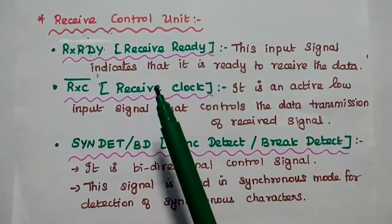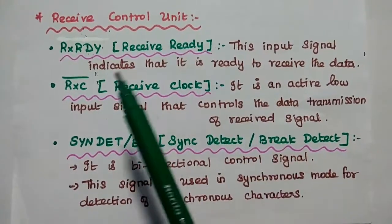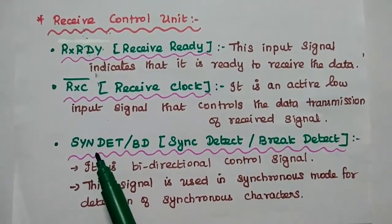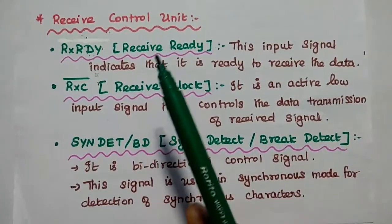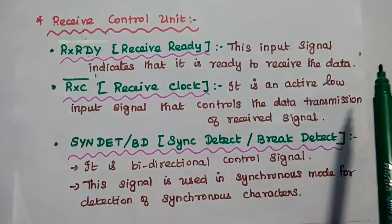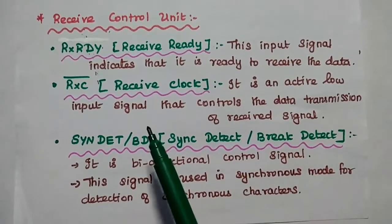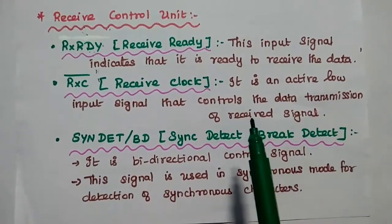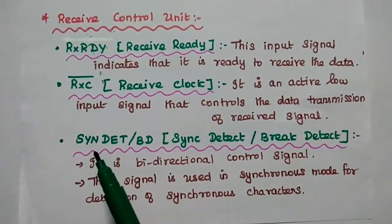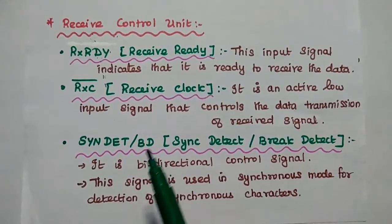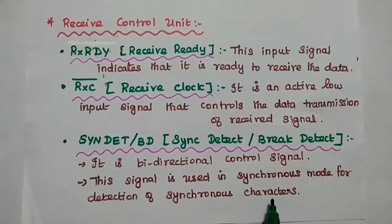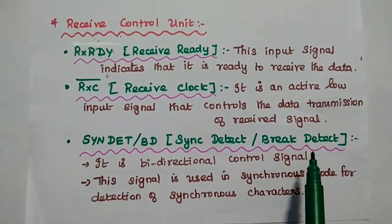The receive control unit controls the operation of the receive buffer using three signals: Receive Ready (RxRDY) — an input signal indicating readiness to receive data from the peripheral device; Receive Clock (RxC bar) — an active low input signal that controls the data reception rate from peripheral to processor; and Synchronous Detect/Break Detect (SYNDET/BRKDET) — a bidirectional control signal used in synchronous mode to detect synchronous characters, and in asynchronous mode to detect break characters.